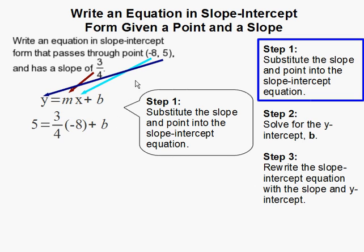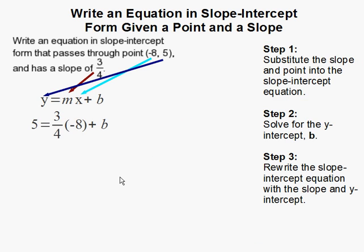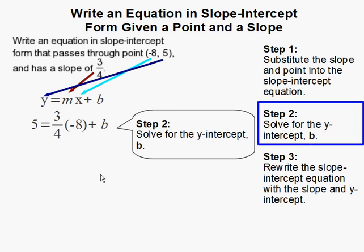Once I have the variables substituted with the information given, my job is then to solve for b. Step 2. Solve for the y-intercept which is b.